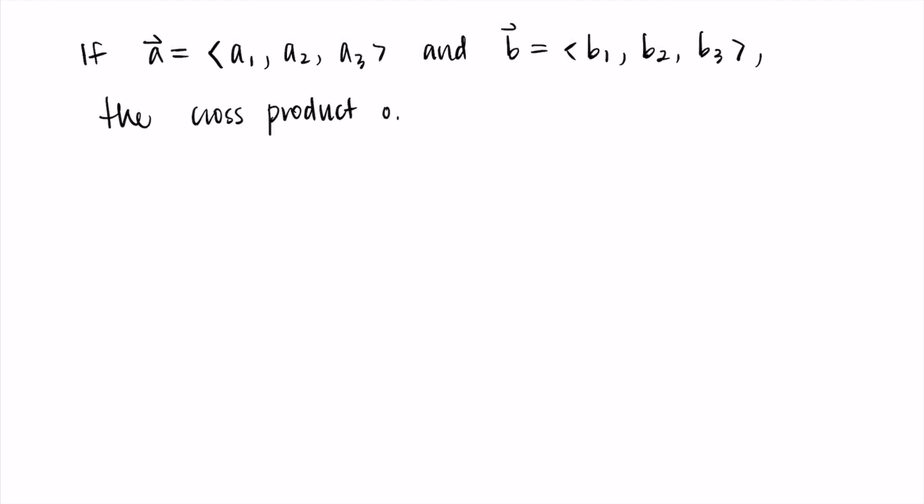Then we're going to define the cross product of A and B. This is this new operation that's going to make an orthogonal vector. So the cross product is this new vector given by, we write A cross B, and it's equal to - this is going to be a long formula, just follow with me. I'll show you where it comes from afterward.